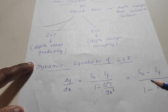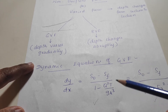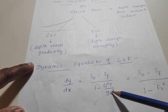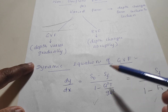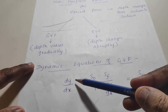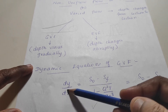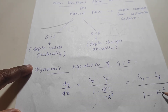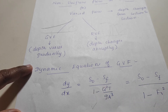You can use either formula depending on the given values. If discharge, area, and similar data are provided, use the first formula. If only the Froude number is given, simply use the second formula with (1 − Fr²) to find dy/dx, the rate of change of flow depth.